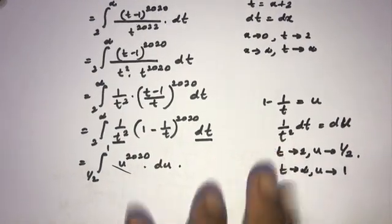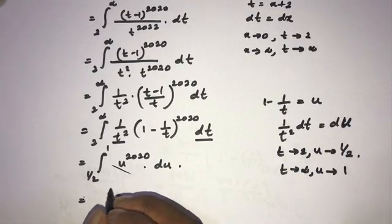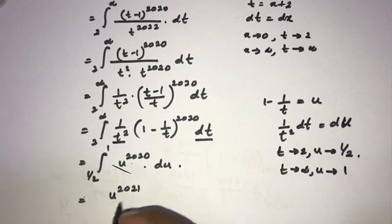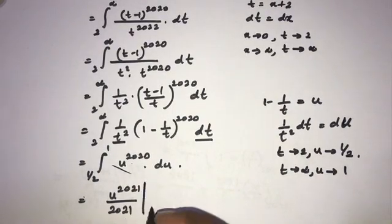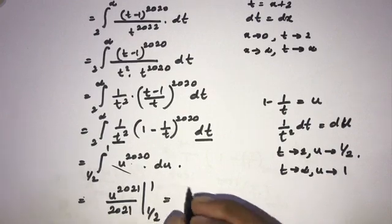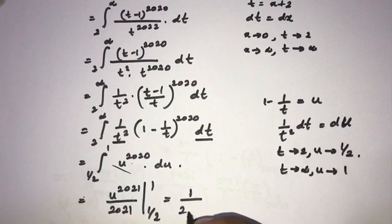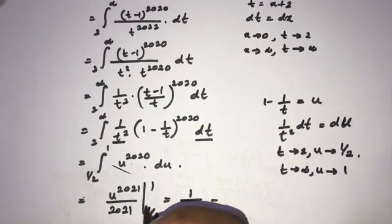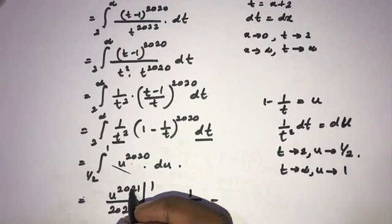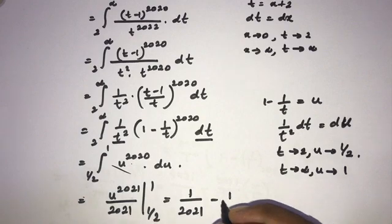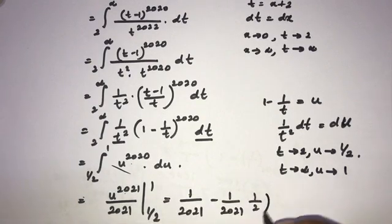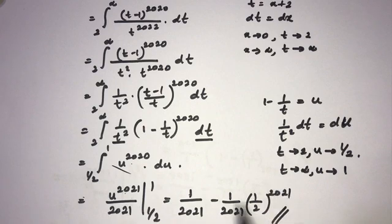This is straightforward using the power rule. We get u^2021 / 2021 evaluated from 1/2 to 1. Plugging in 1 gives 1/2021, and plugging in 1/2 gives (1/2)^2021 / 2021. The final answer is 1/2021 minus (1/2)^2021 / 2021, which we can factor as (1/2021)(1 - (1/2)^2021). If you like this video, please subscribe. Thank you for watching.